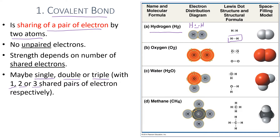The second example is oxygen molecule, O₂. Oxygen has six valence electrons, which must satisfy the octet rule by finding another two electrons. So this oxygen atom will share two pairs of electrons with each other to form a double covalent bond.